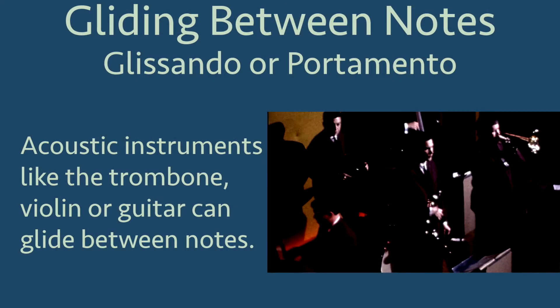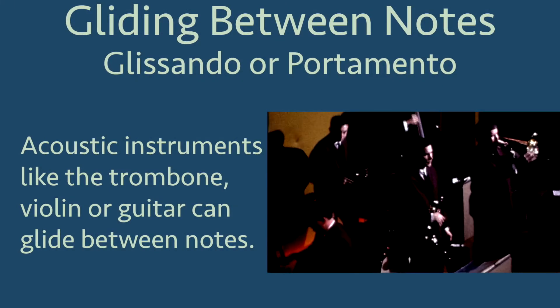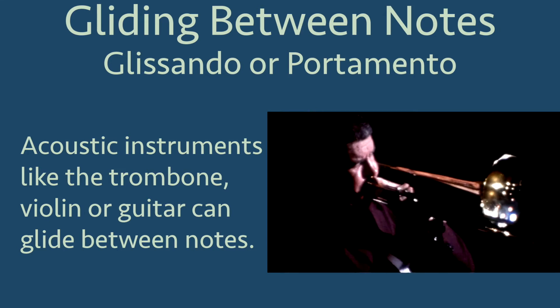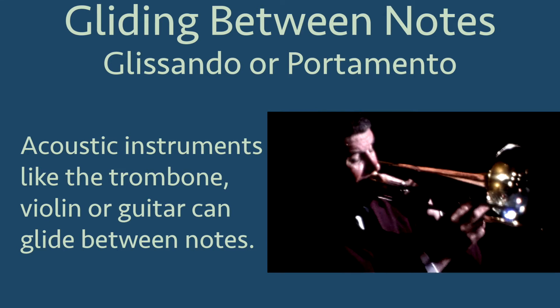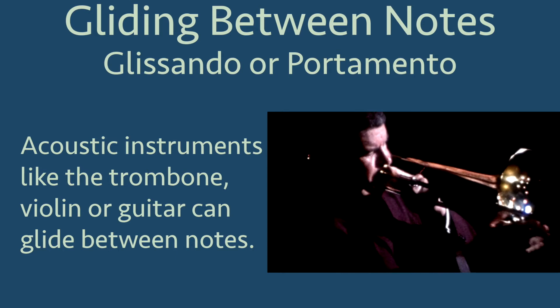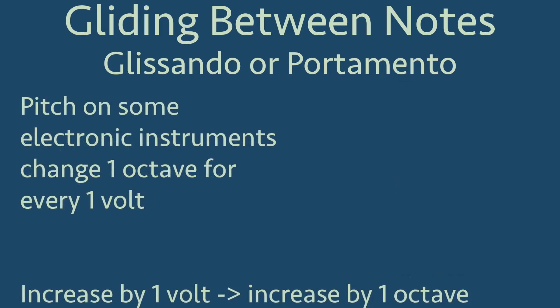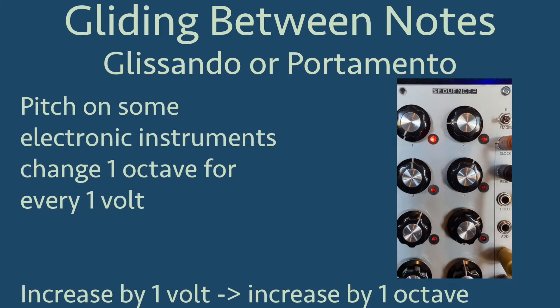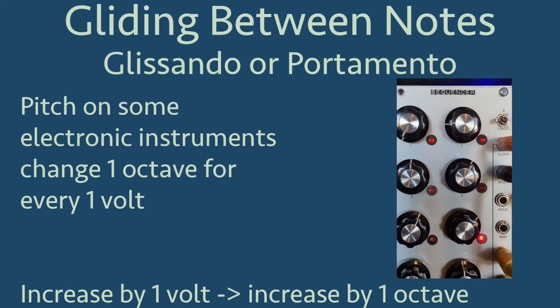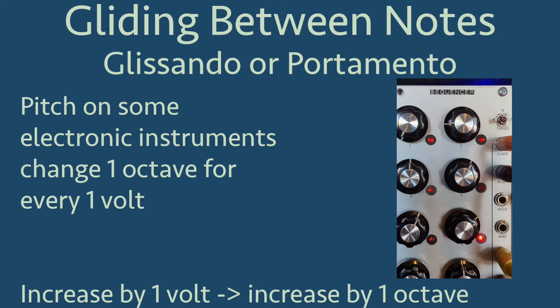Our next example demonstrates gliding between notes. A glide between notes is called a glissando or portamento and can be heard with acoustic instruments like the trombone, violin, and guitar. We can synthesize this on electronic instruments using a slew limiter. First, we'll start with a simple four-note sequence. The notes change the pitch on a synthesizer by changing voltage. For each change of one volt, the pitch changes by an octave.